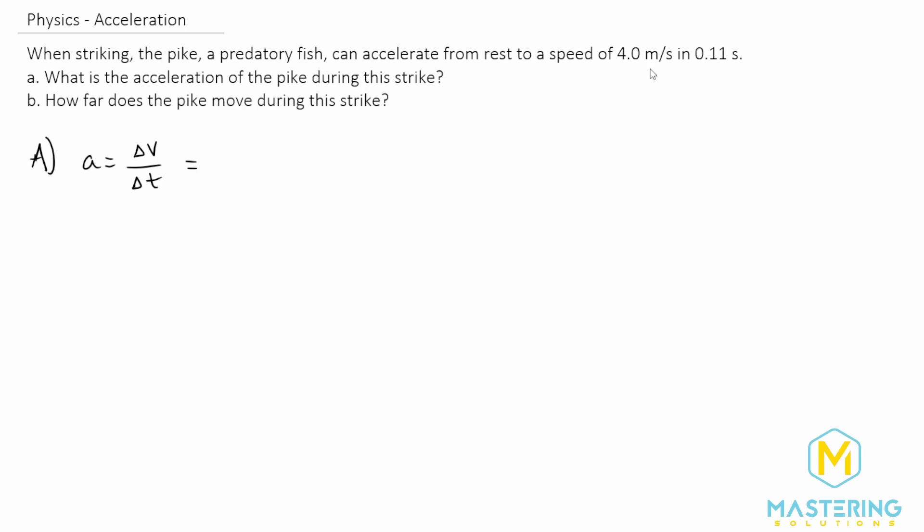Now they give us the velocity in meters per second, and they give us the time in seconds. So we're both in standard units, so we can actually just plug these straight in. So we have 4 meters per second for the change in velocity over 0.11 seconds for the change in time.